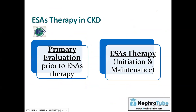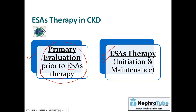How do we use erythropoietin stimulating agents as therapy in chronic kidney disease patients? We need to follow two main steps: first, evaluate the patient before starting ESA therapy, and then initiate the therapy.